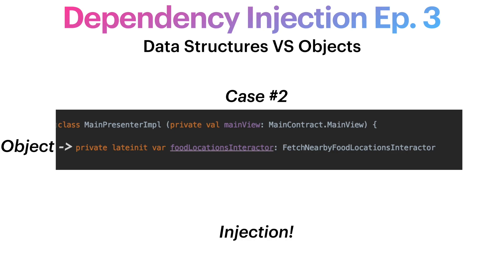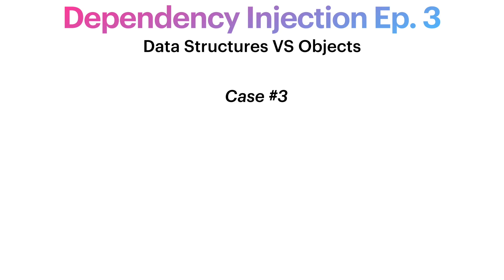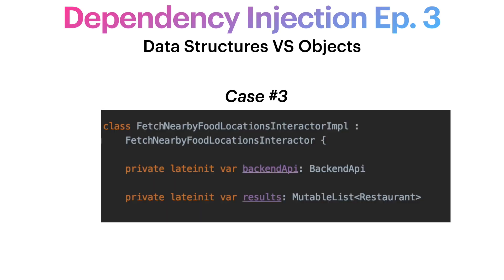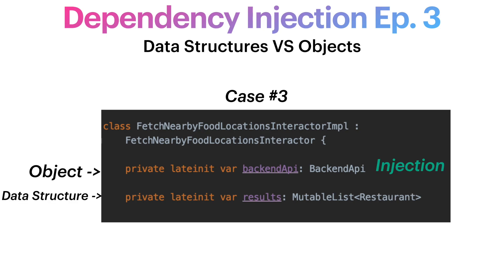Now let's go inside that use case and see its dependencies. We see here that we have a reference to the Retrofit API, and also a reference to a list of restaurants that will be returned. So what do we inject here and what do we encapsulate? First of all, Retrofit is obviously a networking interface and therefore classifies as behavior. But the list of objects? Well, this is a data structure. So this is a case of encapsulation — we should not inject that. So we inject Retrofit, but we encapsulate the data structure, the list of objects.